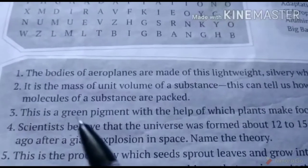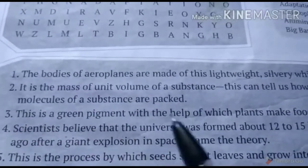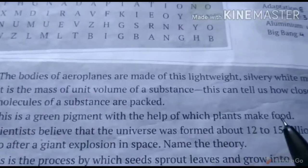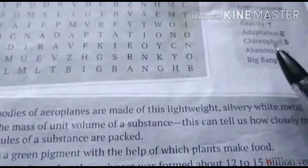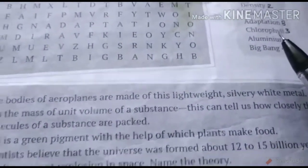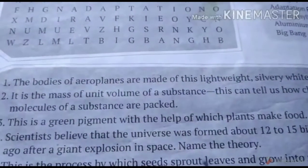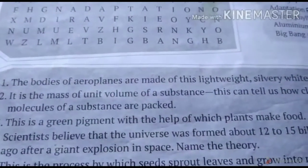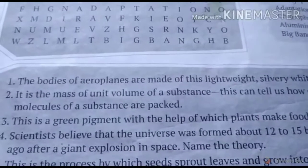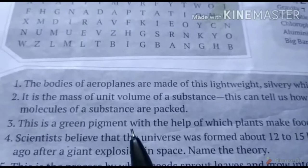Number three: this is a green pigment with the help of which plants make food. The right answer is chlorophyll. Jo hara rang hota hai paudho mein, uski sahayta se paudhe bhojan banaate hain — wo chlorophyll hai. Leaves contain the green pigment called chlorophyll.